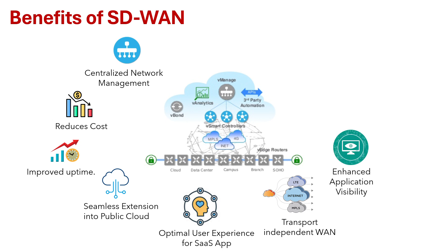Another important benefit is enhanced application visibility and intelligent path control. SD-WAN provides this by monitoring application performance using different tools — for example, it has vAnalytics, which collects network data and feeds it to the controllers.